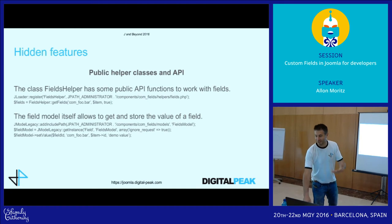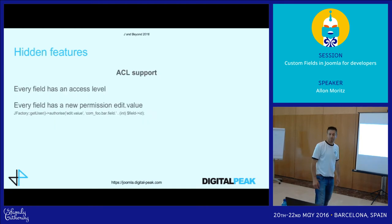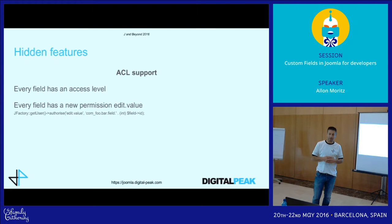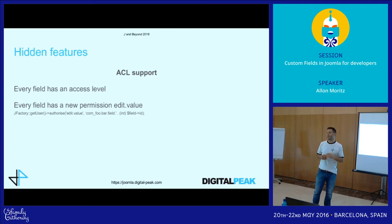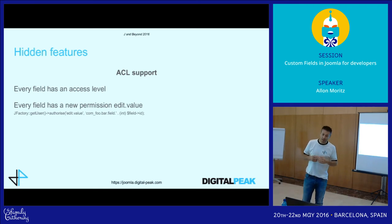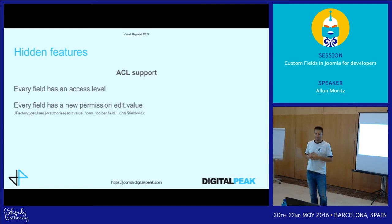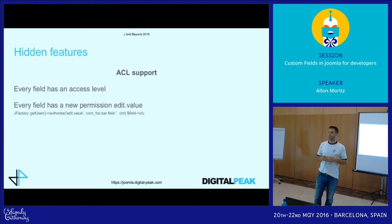ACL support is implemented. Every field has an access level defining who can see it on the front end. A new permission, 'editValue,' is being added to the core. This means you can define on a per-field level who can edit that field — if someone can edit the article but not a specific field, that field will be disabled. A pull request for this is open and awaiting review.